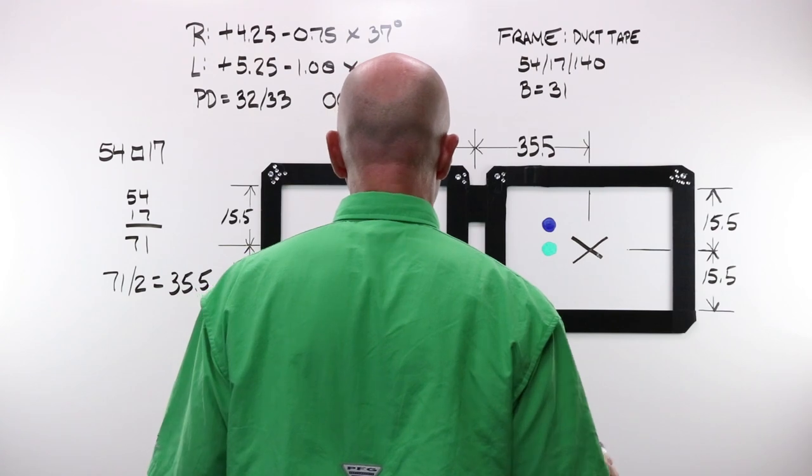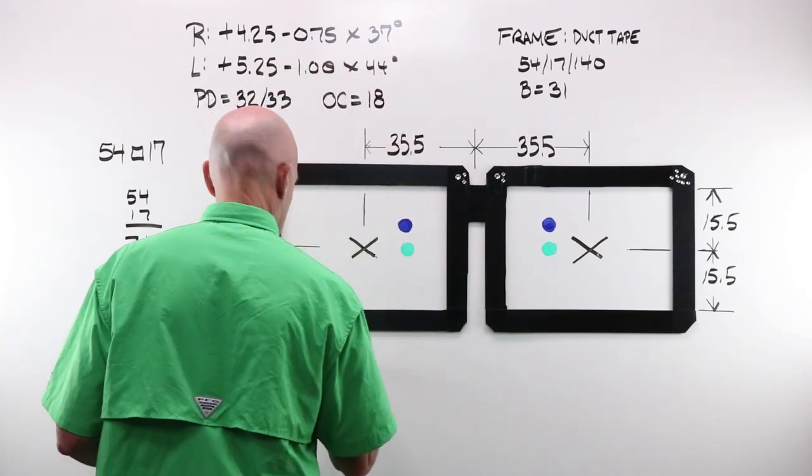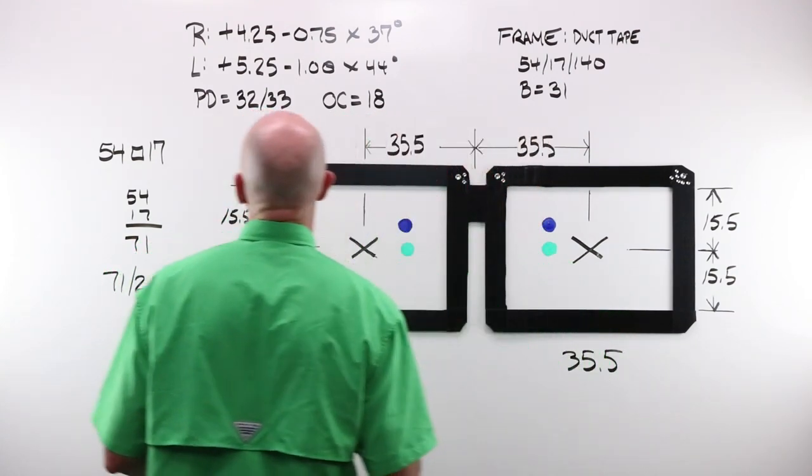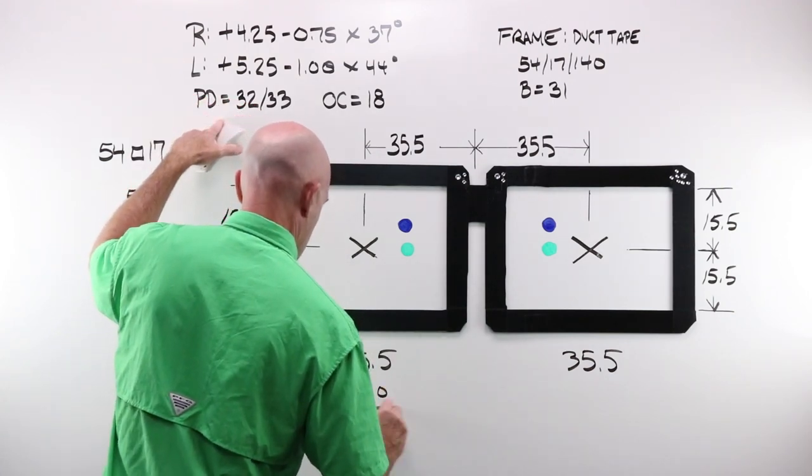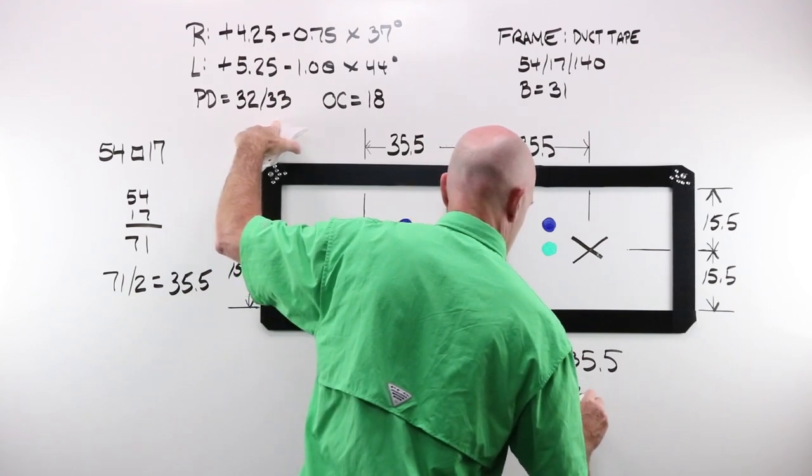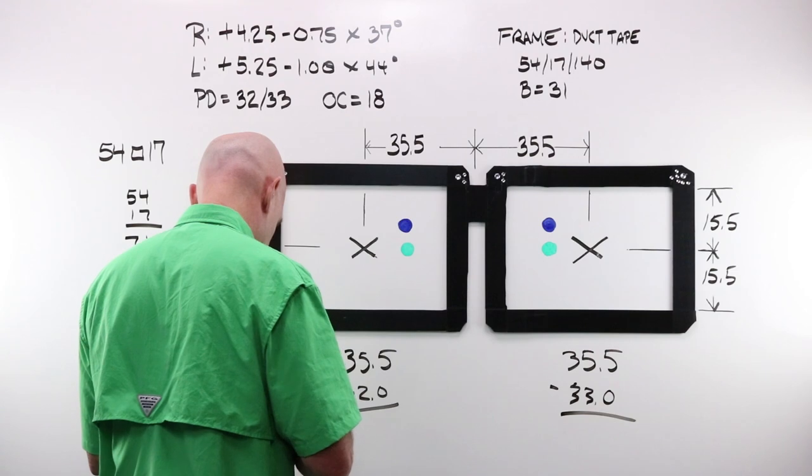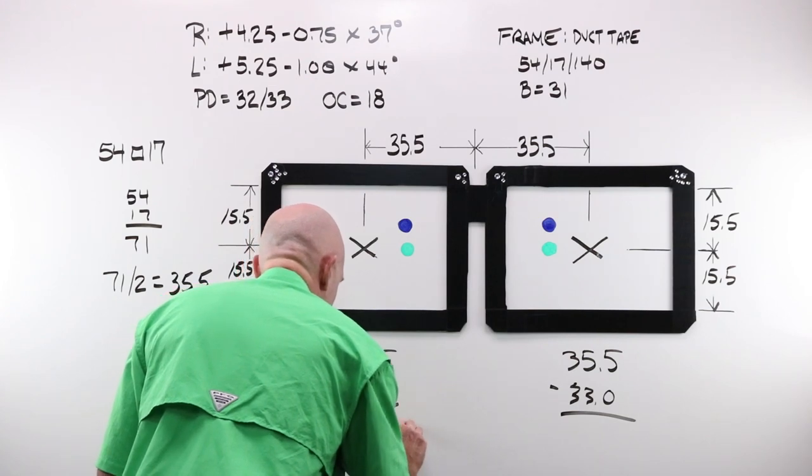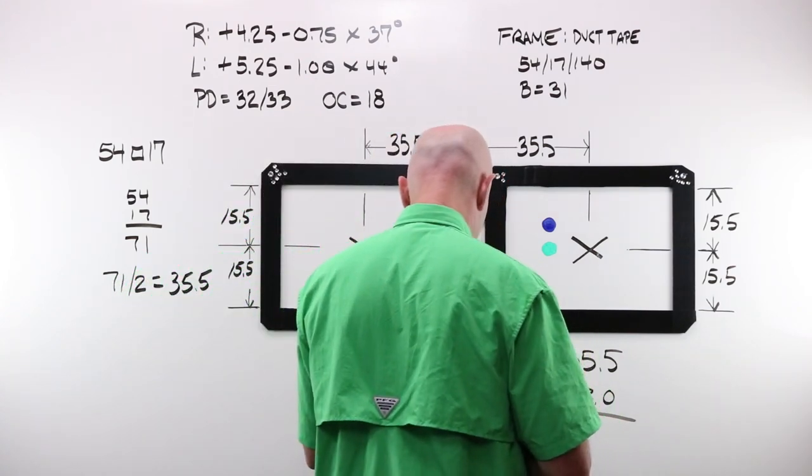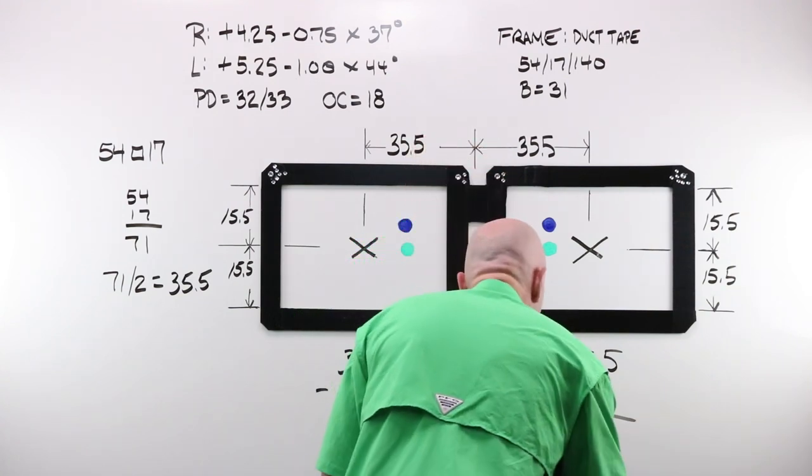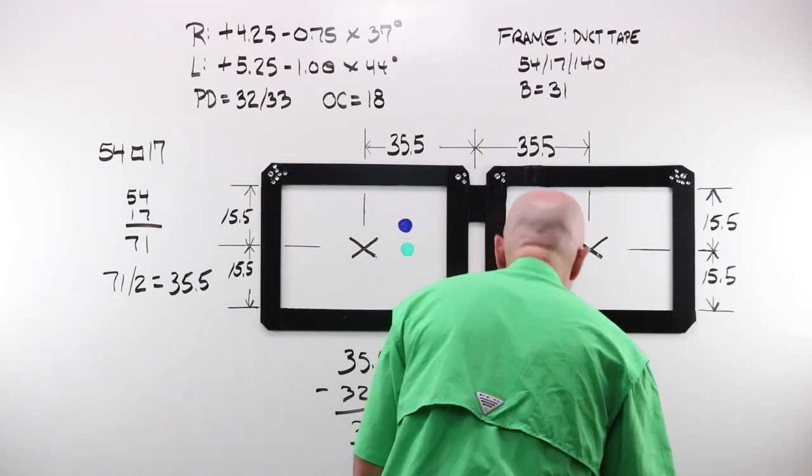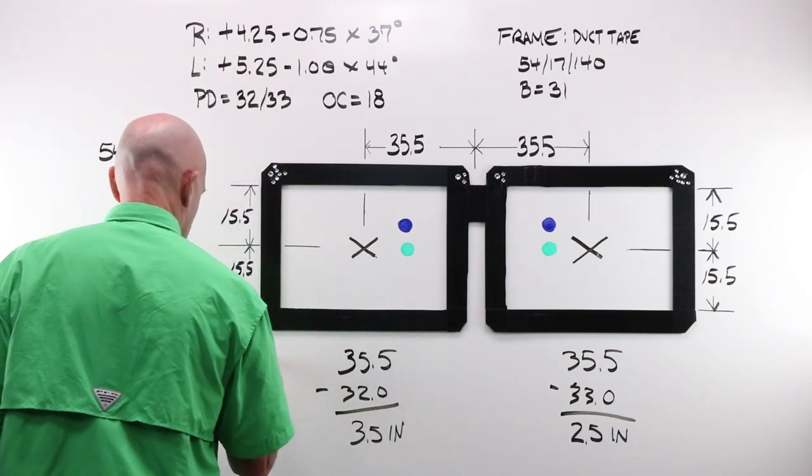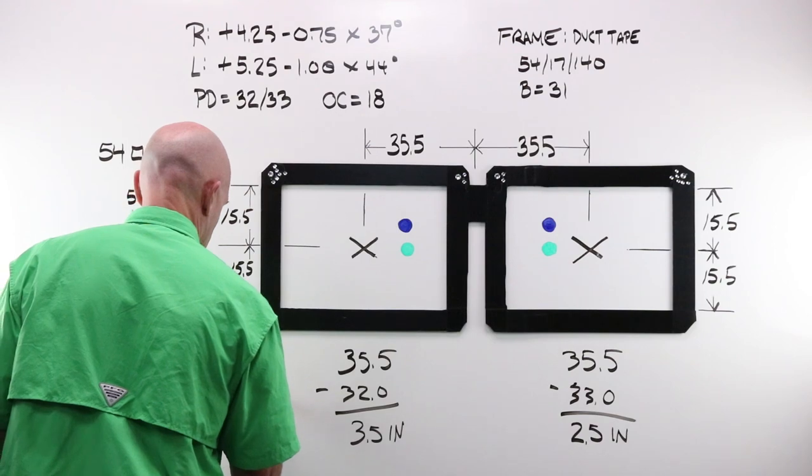Because I have an OC height, I'm going to need to do basically the same thing with my B as I do with my A's. 31 divided by 2 is 15.5. And for my decentration for horizontal, for my PD, I've got 35.5 minus 32 minus 33. 35.5 minus 32 is 3.5 in.